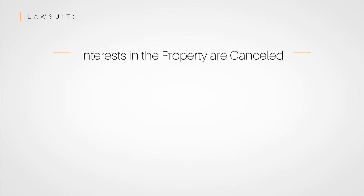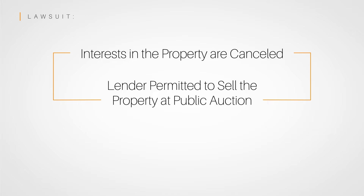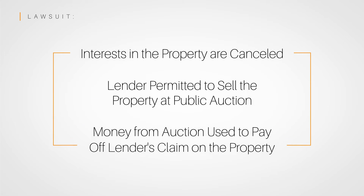The lawsuit generally requests three different things. First, that the borrower's interest in the property are canceled and that the title is essentially in the same condition as it was prior to the date the loan was given. Second, that the lender be permitted to sell the property at public auction. And finally, that the money made from the auction will be used to pay off the lender's claim on the property.